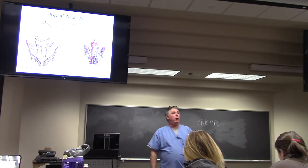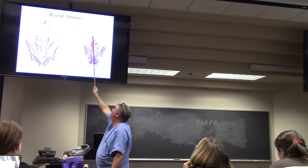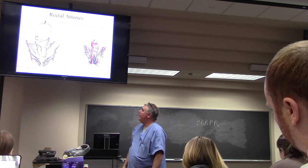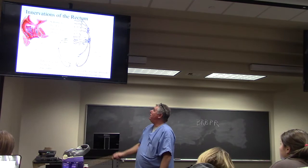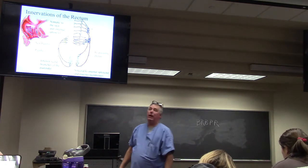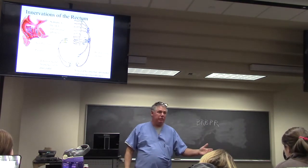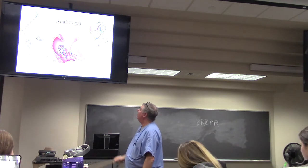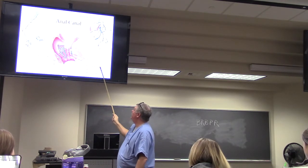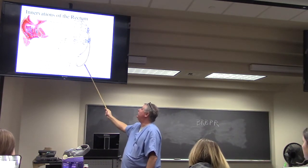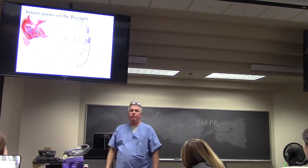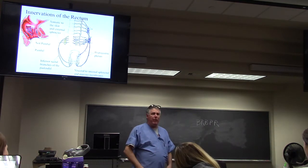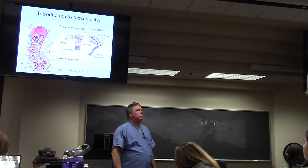Rectal arteries is what I mentioned earlier here. Superior from the inferior mesenteric. Middle from the internal. And inferior from the pudendal arteries. We're going to see the pudendal tomorrow, as I said. The innervation here. The pelvic parasympathetics innervate the rectum. That's defecation. Remember Hirschsprung's disease that you just studied. The external anal sphincter or the part of the anus below the pectinate line right here. That is somatic. And so that is pudendal. Mostly everything important that's somatic down here in your pelvis is pudendal.